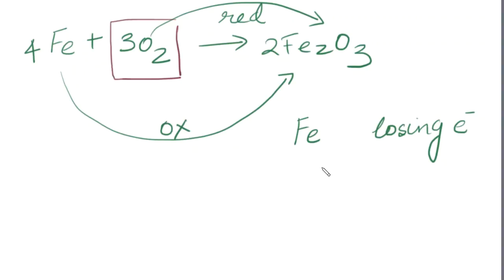Oxygen is gaining electrons and is causing... Gaining electrons causes the other guy to be oxidized. And losing electrons causes the other guy to be reduced. Does that make sense?